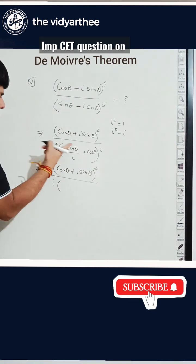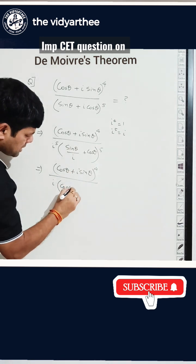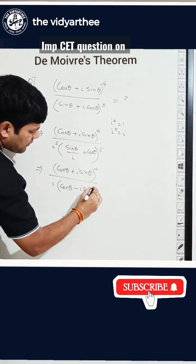And what is this? This becomes, if you rationalize, this becomes i sine theta and this is cos theta. So this is cos theta, i sine theta power 5.